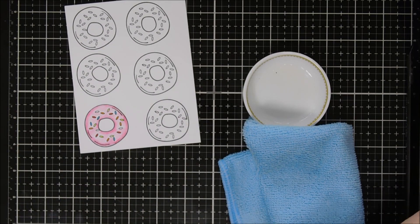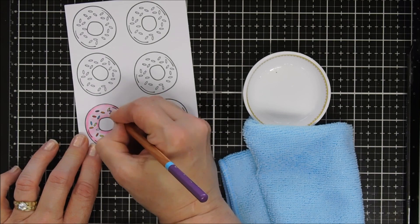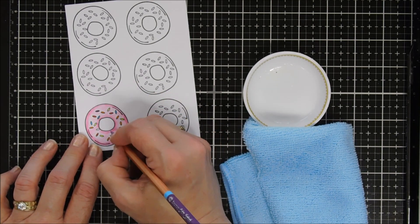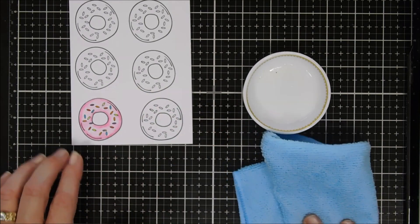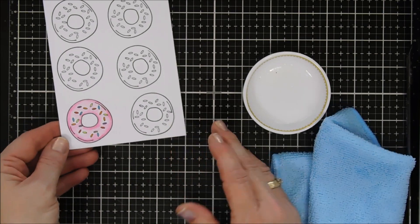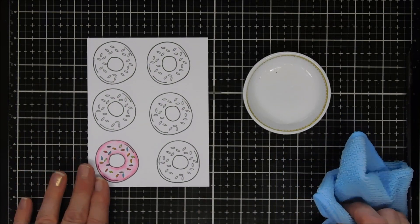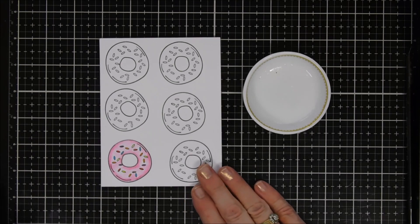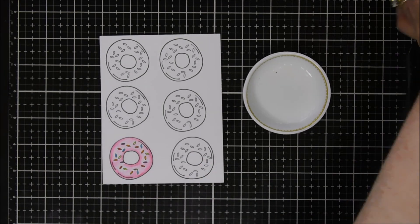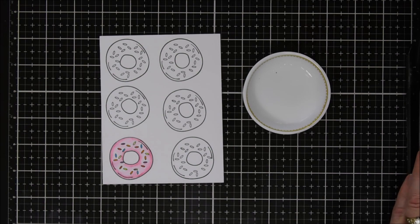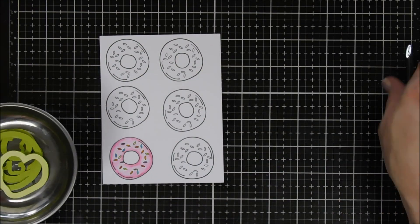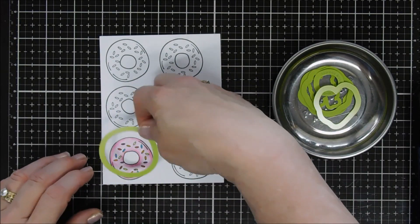I think this donut image is adorable and you can do any color donuts you can use. A traditional tan color donut if you want, but I just chose some bright and vibrant colors. Okay, I'm going to take the coordinating die for the donut and cut it out. We're just going to tape it down with some purple tape. Then in the die set there is a donut hole.